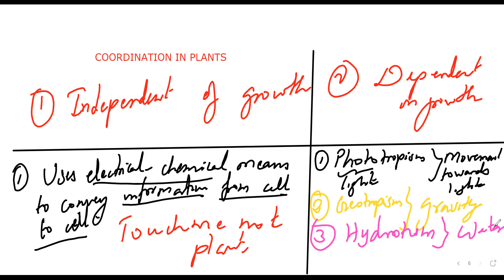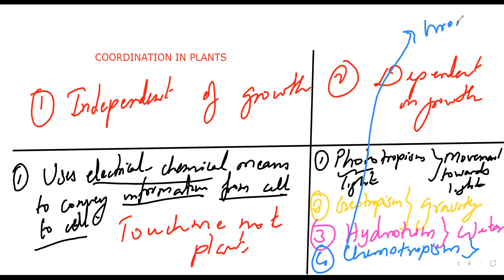The fourth type is chemotropism. Chemotropism refers to the growth of the pollen tubes towards the ovule. These are the main responses to stimulus in plants.